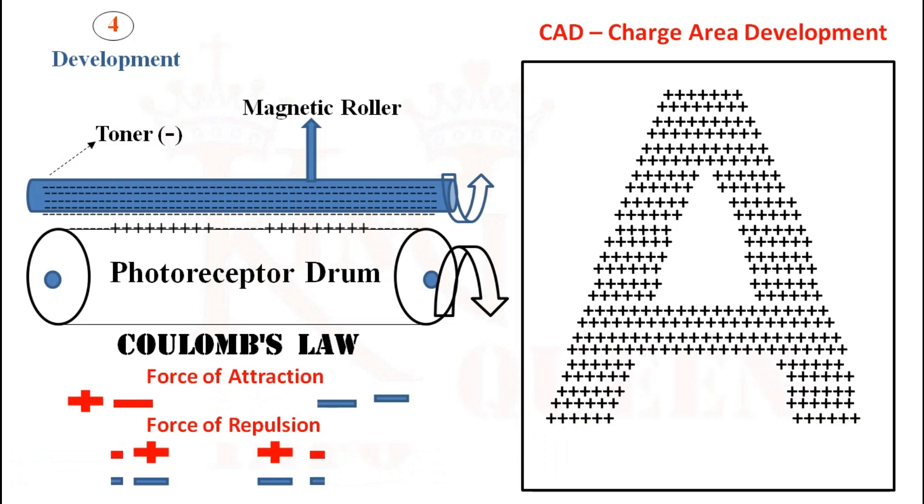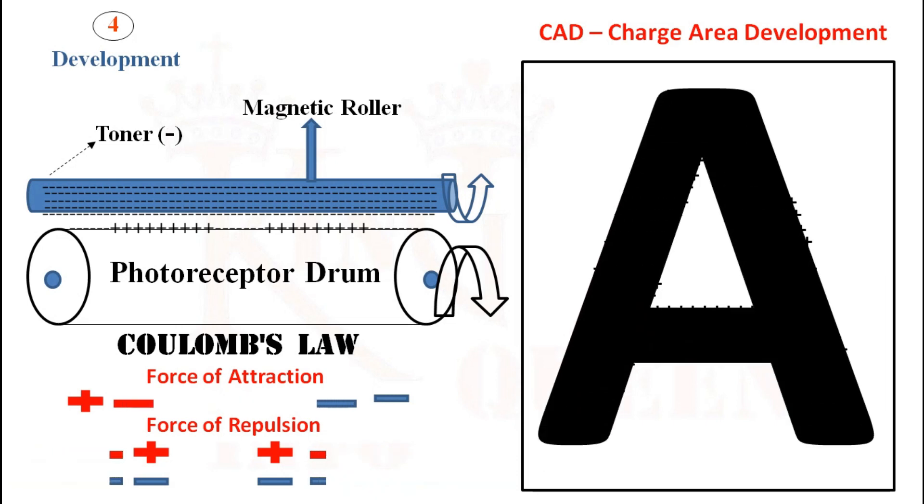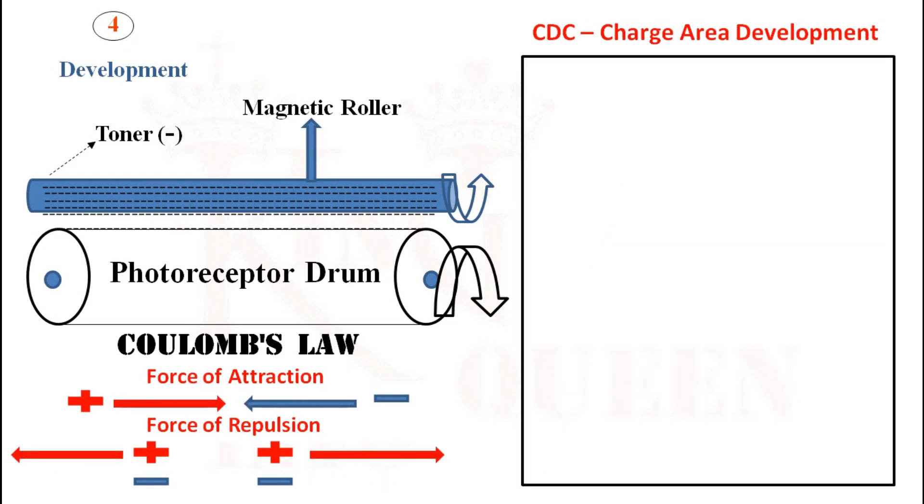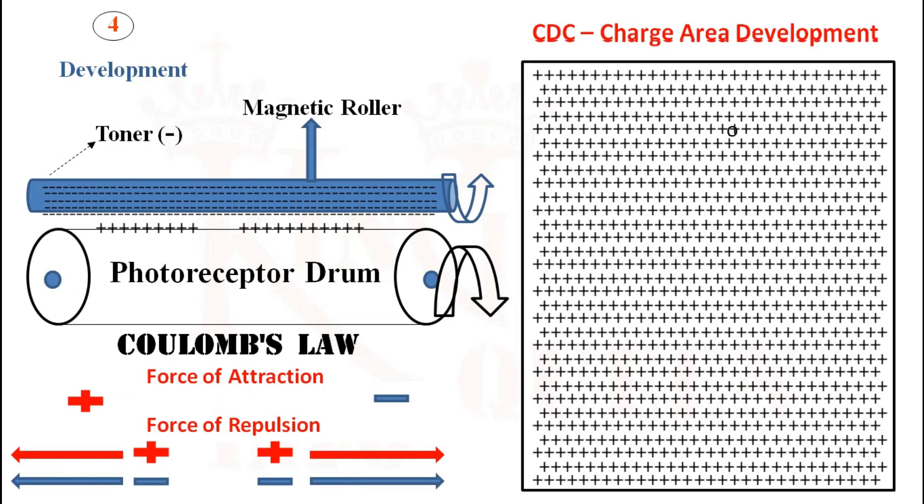If your original document is white or blank, the photoreceptor drum is discharged fully. In this case, toner will repel, not attract. If your original document is full black, the photoreceptor drum is fully charged.